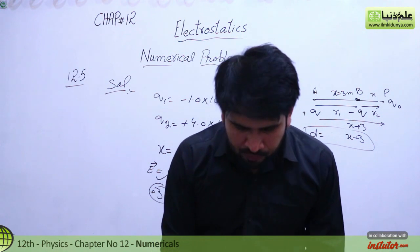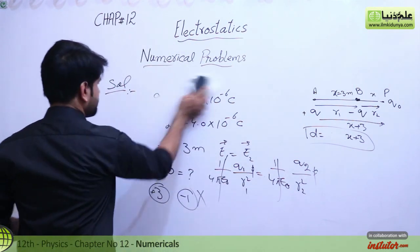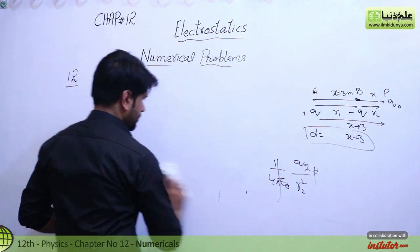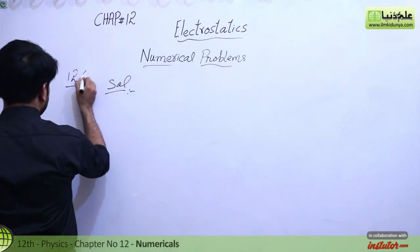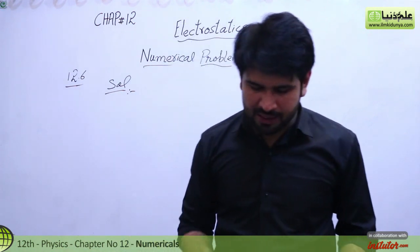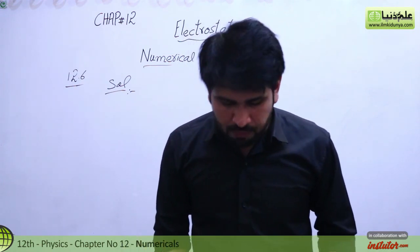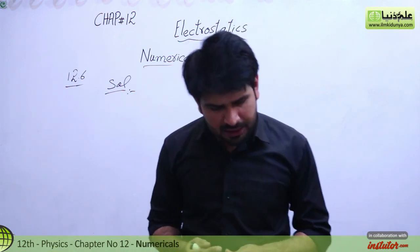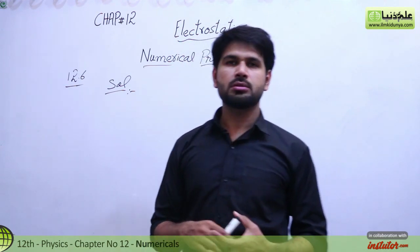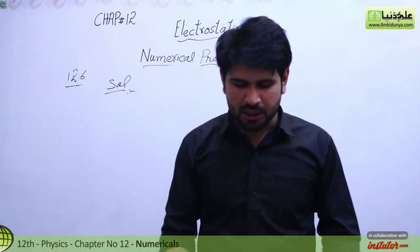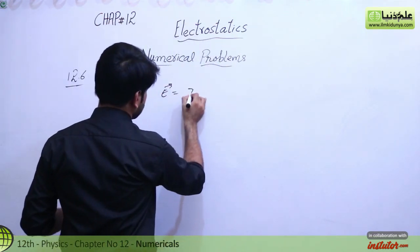Next numerical problem is 12.6. Let's see the statement: Find the electric field strength required to hold or suspend a particle of mass 1.0 times 10 to the power minus 6 kg and charge 1.0 microcoulomb between two plates separated 10.0 cm apart. We need to find the electric field strength or electric field intensity.